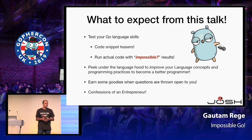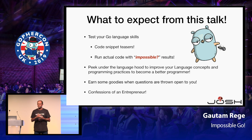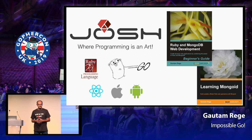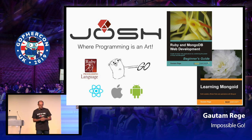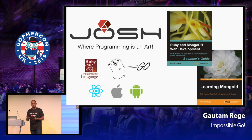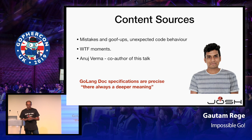I don't want the talk to be too heavy, so I'm also going to talk about a few confessions as an entrepreneur, and a little bit about me. My company's name is Josh — there is no Josh in my company. I co-founded it 12 years ago. I've been programming for about 20 years, and I do believe that programming is an art. My company works exclusively in Ruby and Go, and of course we support React, native Android, and iOS. I had the privilege of authoring a couple of books.